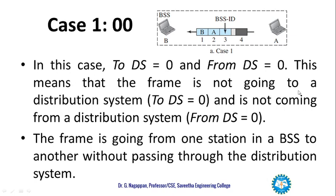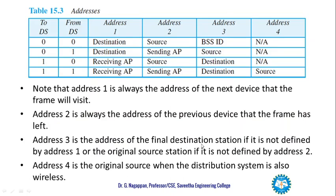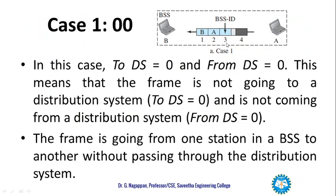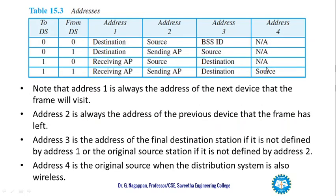This means the frame is not going to the distribution system and is not coming from the distribution system. So address 1 is B, and address 2 is the source, which is A. Address 3 is the address of the final destination station, which is the BSS ID where the frame is going to reach. Address 4 is not available in this case.